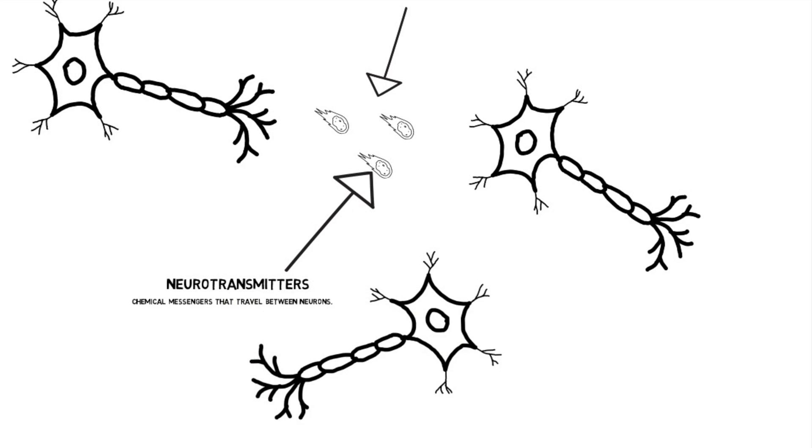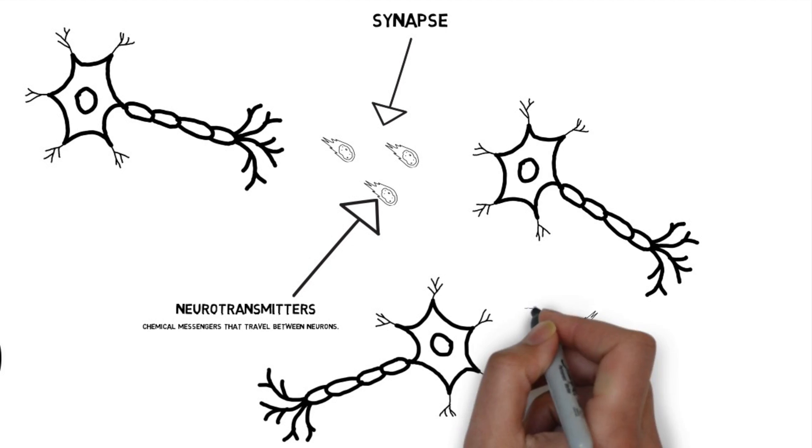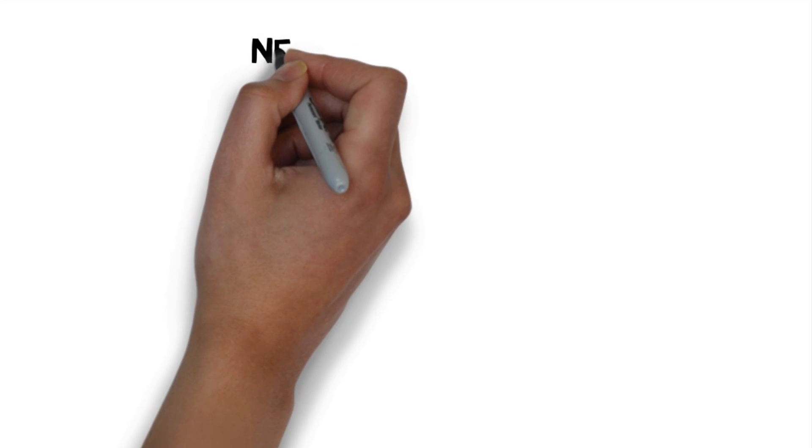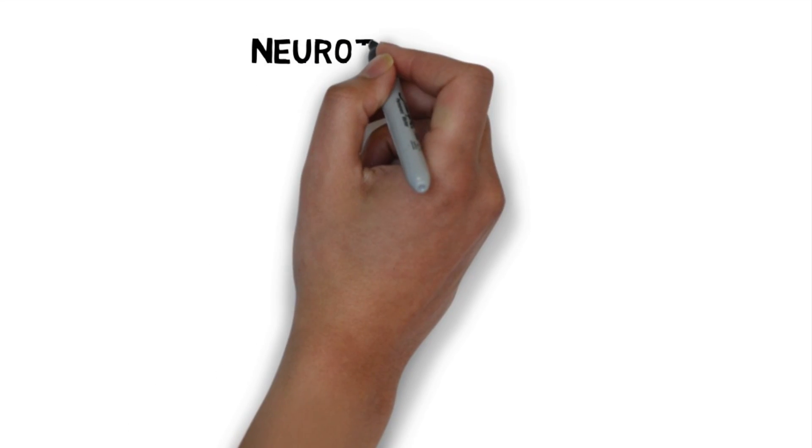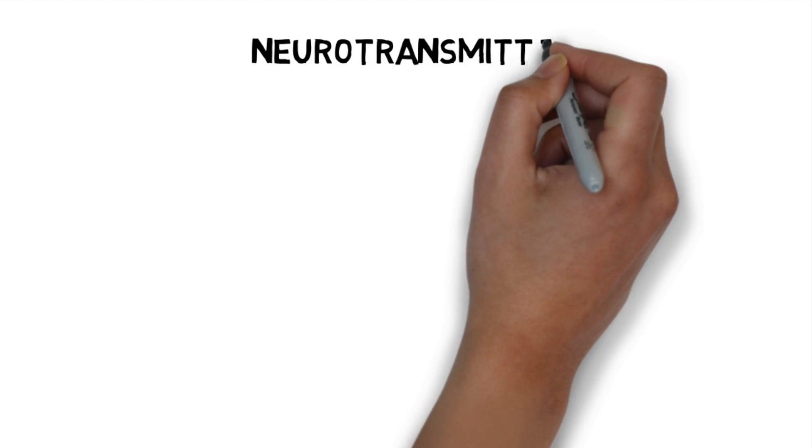Every thought, every single memory, every emotion you've ever had is because of specific chemicals or these neurotransmitters that are being shot across the synaptic gap between neurons in our brain. So how many different types of neurotransmitters do we have in our brain? Well, scientists estimate there's anywhere between 30 and 100, with about 10 of them handling 99% of the functions in our brain.